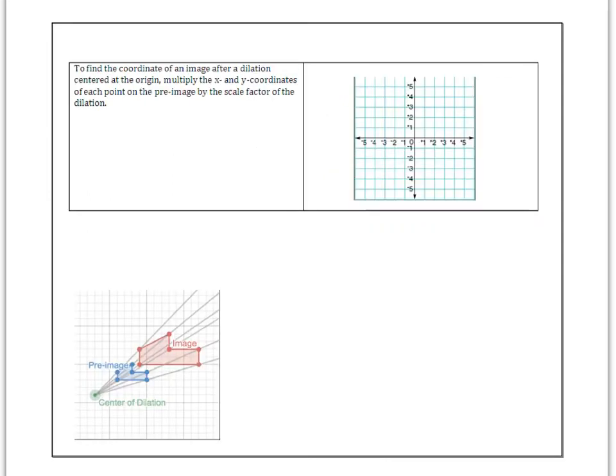To find the coordinate of an image after a dilation centered at the origin, you multiply the x and y coordinates of each point on the pre-image by the scale factor of the dilation.